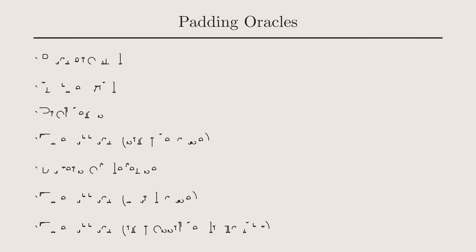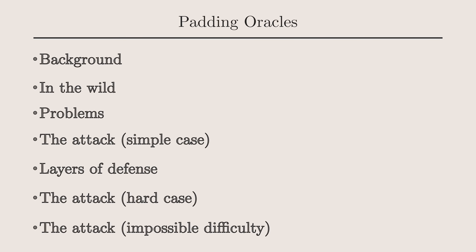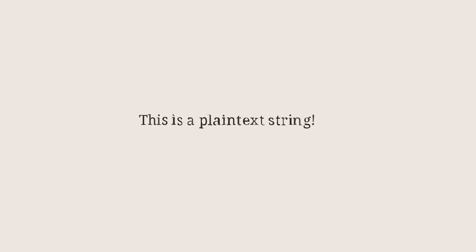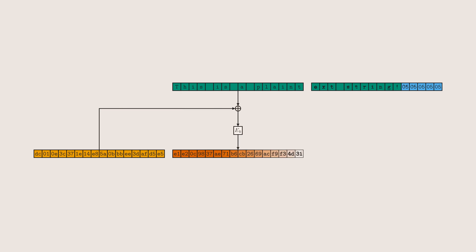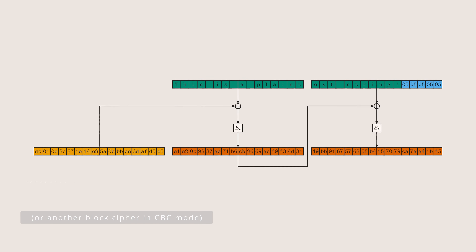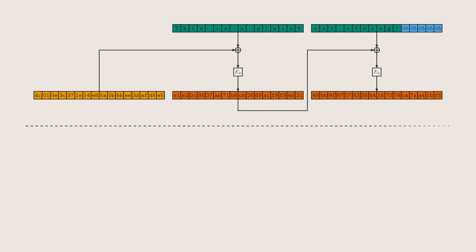But that's enough backstory, let's get to the crypto. In this attack we'll be exploiting a very small information leak. The setup is: the defender comes up with a plaintext, which they encode, pad out to the block length, and encrypt with AES-CBC. They take the result and provide it to the attacker.